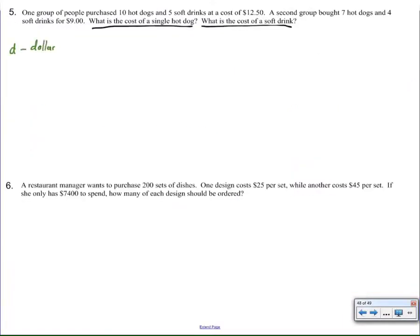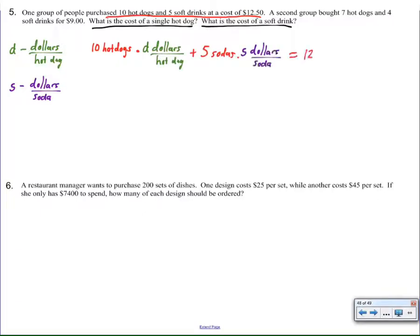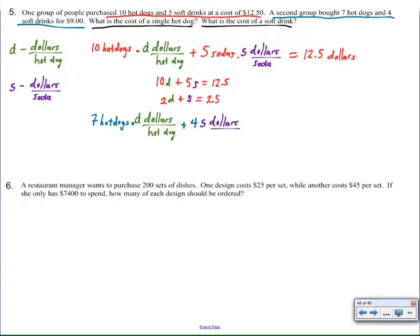I'll go through the rest of these rather quickly. Number 5, we're looking for the price of a hot dog and the price of a soda, and so those are rates - dollars per hot dog, dollars per soda. If I take 10 hot dogs times D dollars per hot dog, add that to 5 sodas times S dollars per soda, it's going to cost me $12.50. Getting rid of the labels, cleaning it all up and simplifying, I get a nice easy equation: 2D plus S equals $2.50. 7 hot dogs times D dollars per hot dog is going to give me the price of hot dogs. 4 times S dollars per soda is going to cost me $9 total, and there's my linear system.